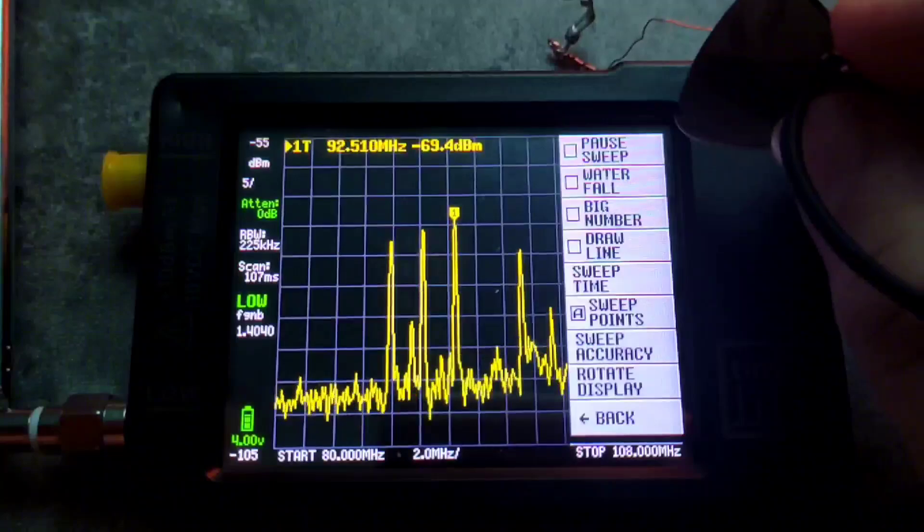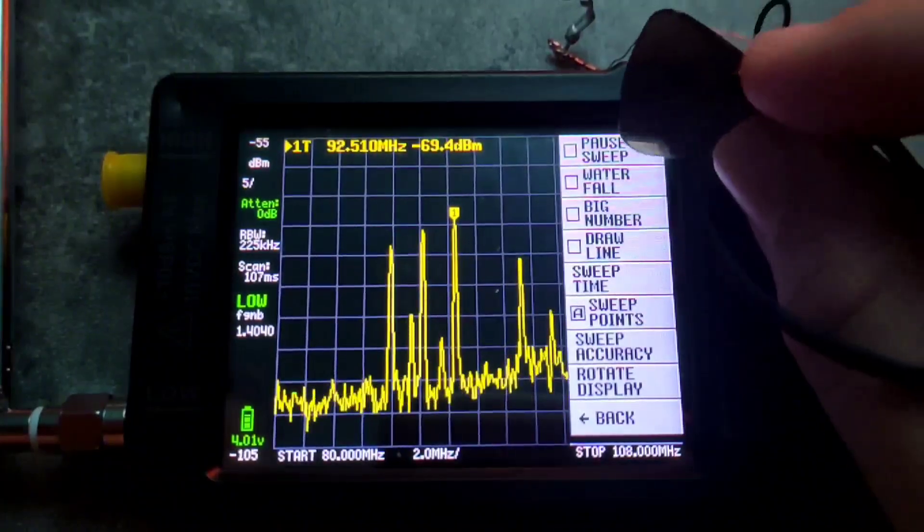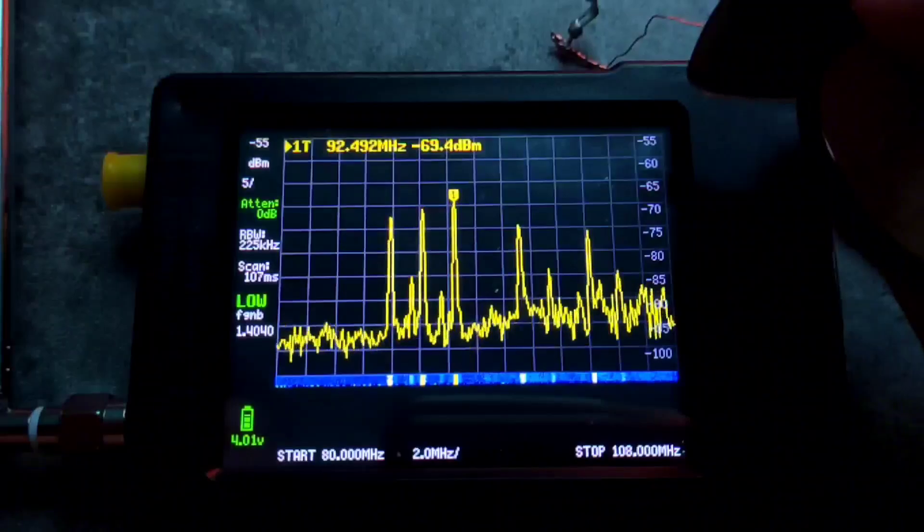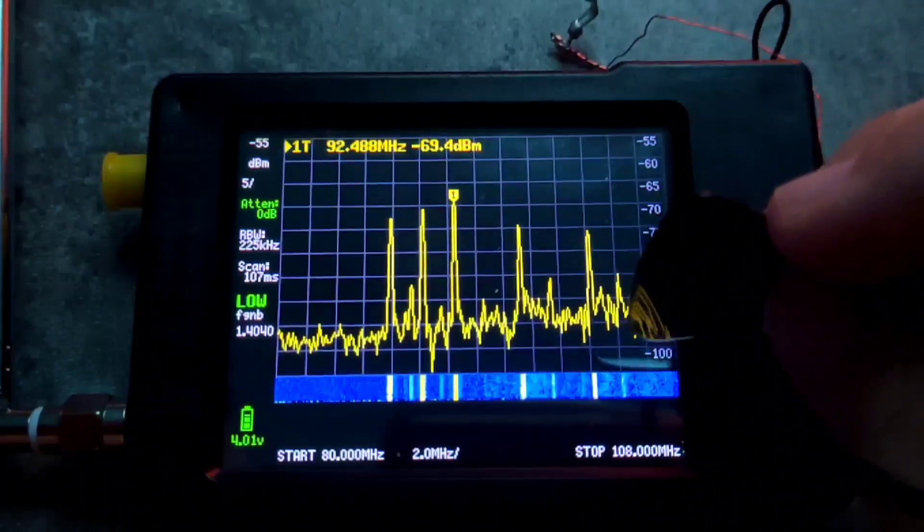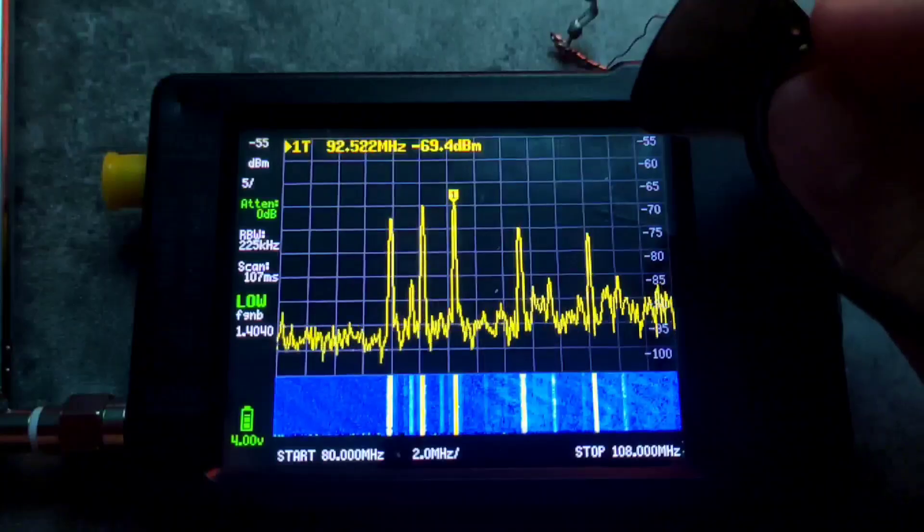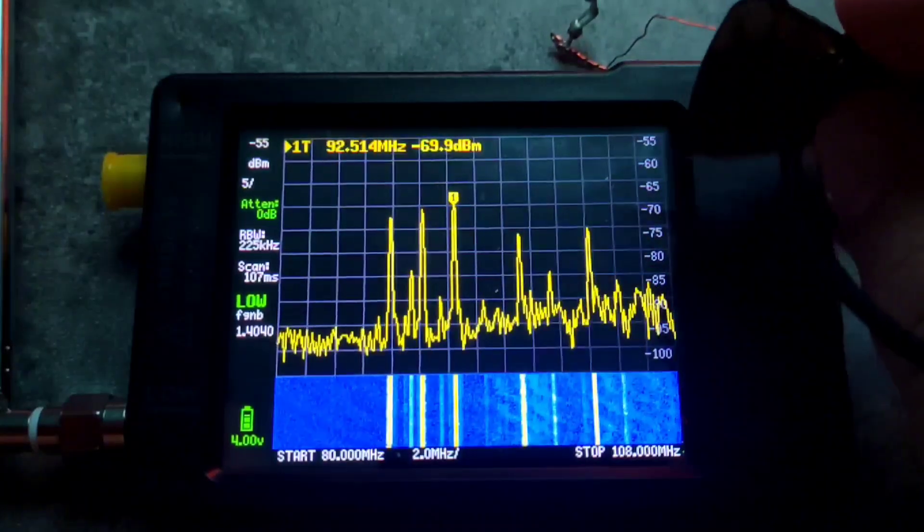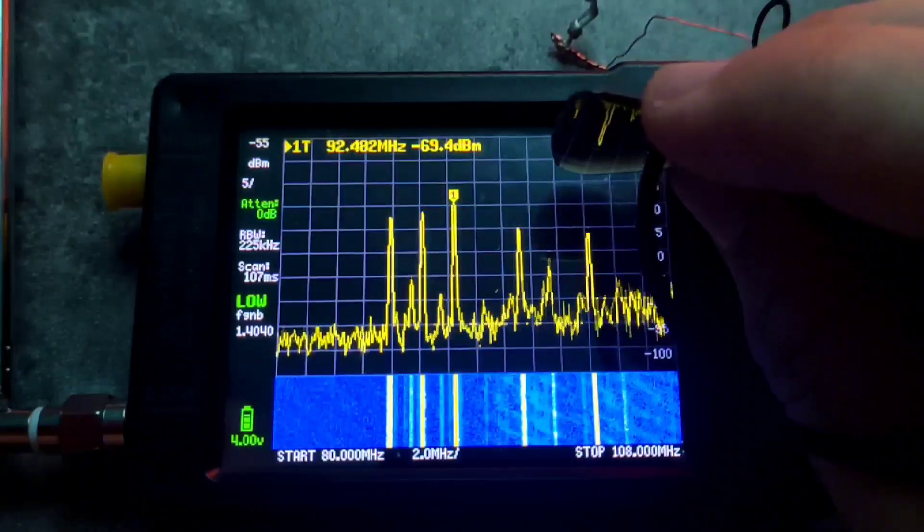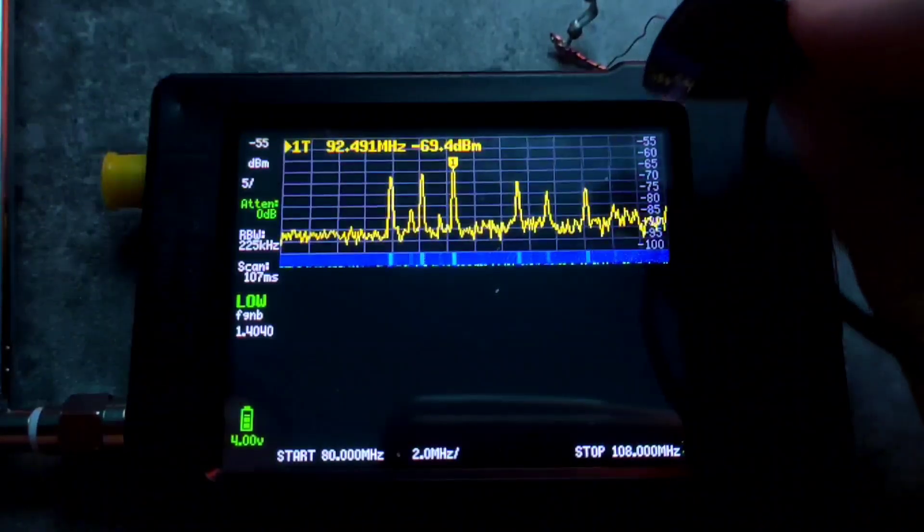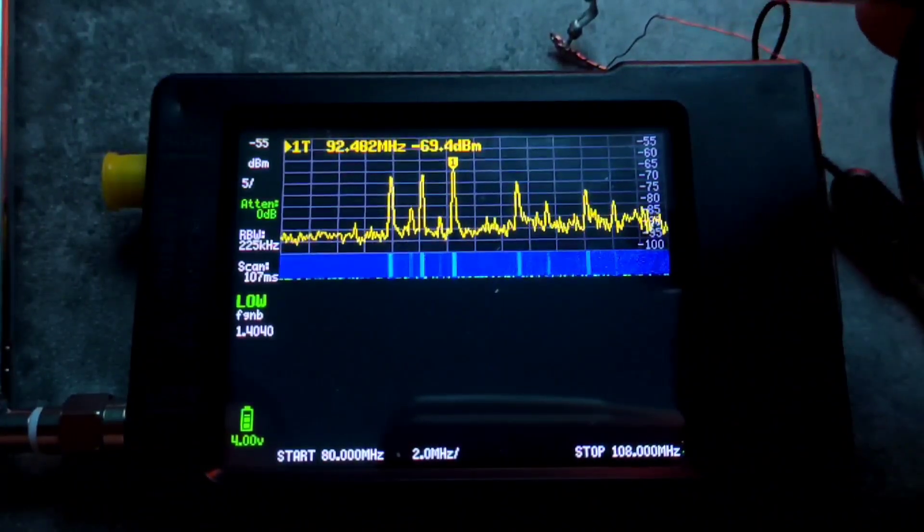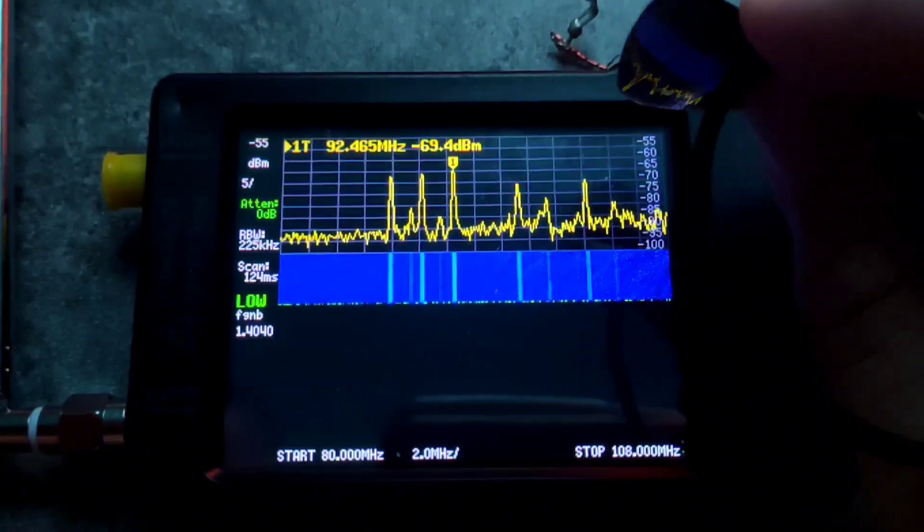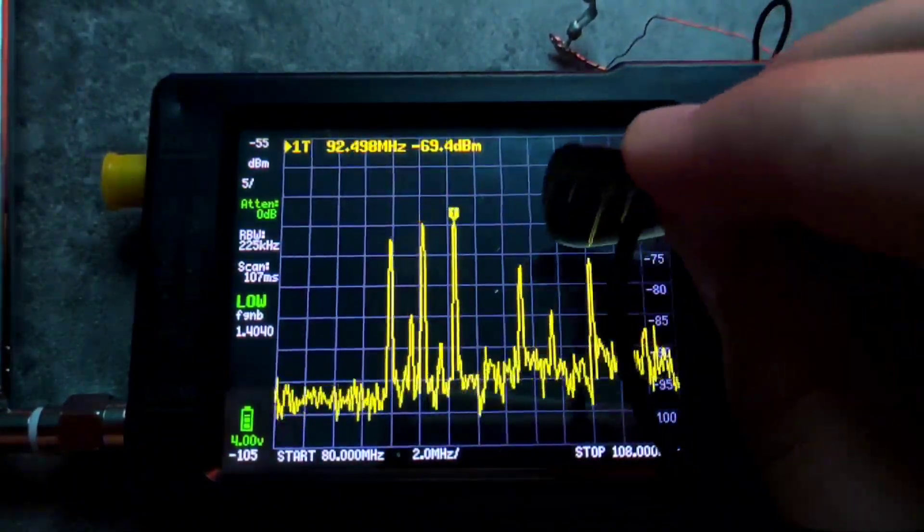Display is also a pretty important function. Here we can for example stop the sweep and add a waterfall. Now we get a time amplitude slash power and frequency graph. Of course, you can tap another time the waterfall and when you tap it again you basically get an even larger waterfall. Pressing it again will eliminate the waterfall.